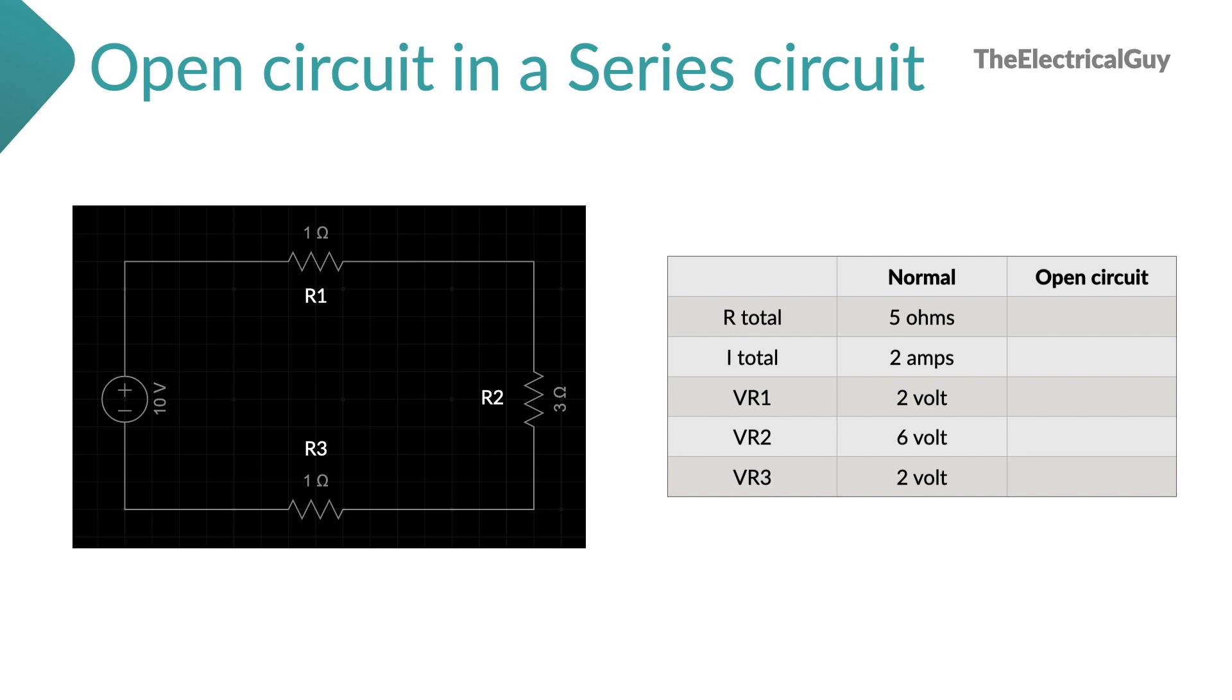Now with this data, we can find out the voltage drop across each resistor. So voltage drop across R1 is 2V, R2 is 6V and R3 is again 2V. So this is the normal situation.